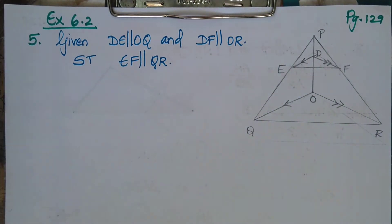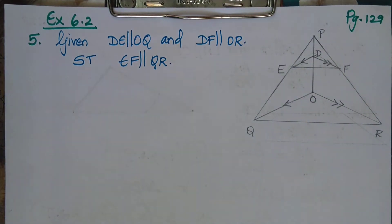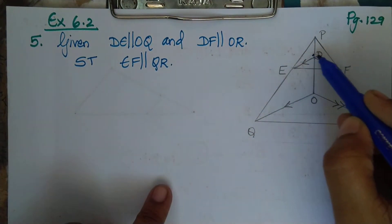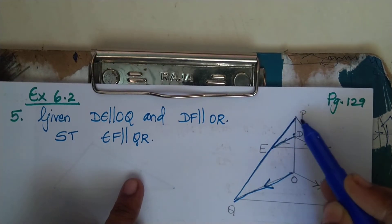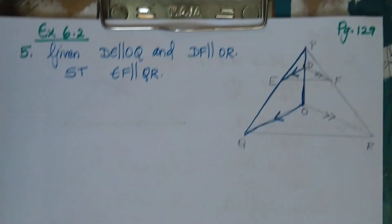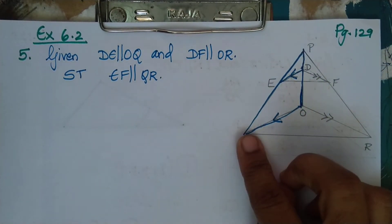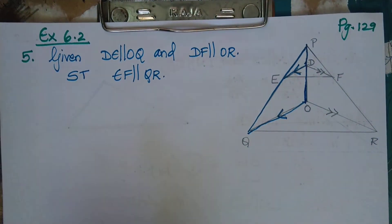What we have to prove is EF parallel to QR. Since DE is parallel to OQ, we consider triangle OPQ — because DE is parallel to OQ, which is the third side of triangle OPQ. In triangle OPQ, we apply BPT (Basic Proportionality Theorem).